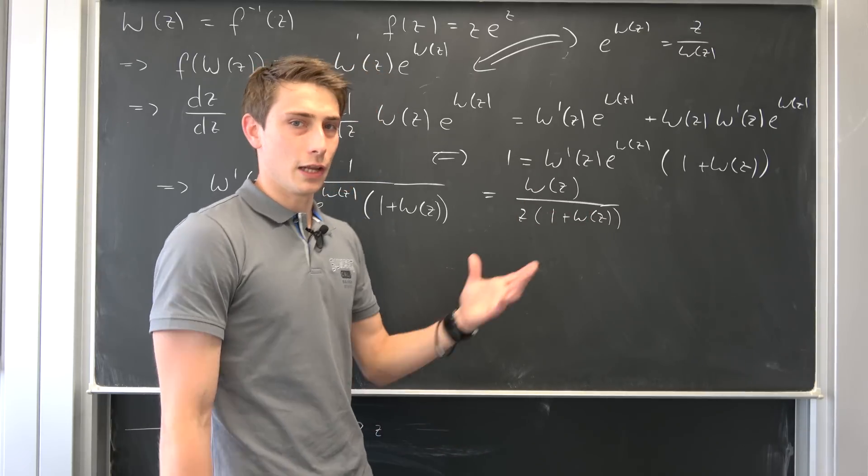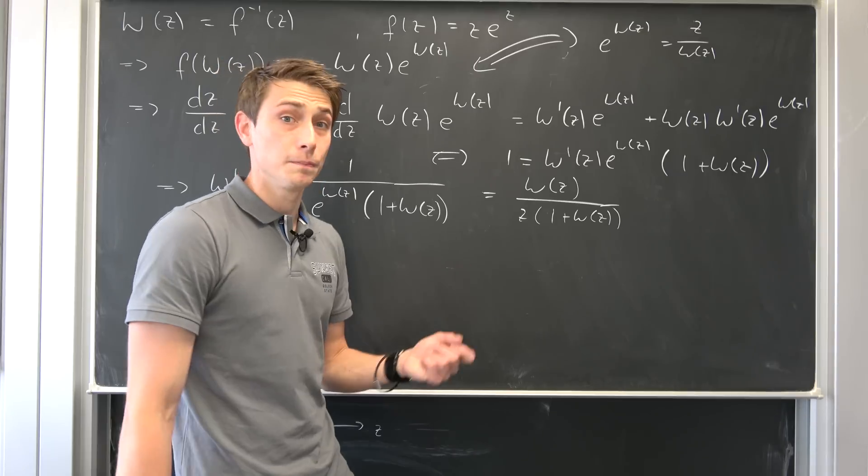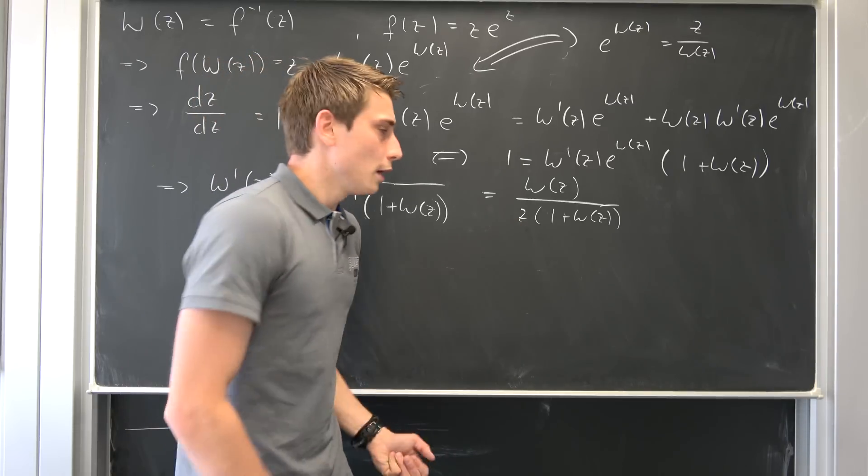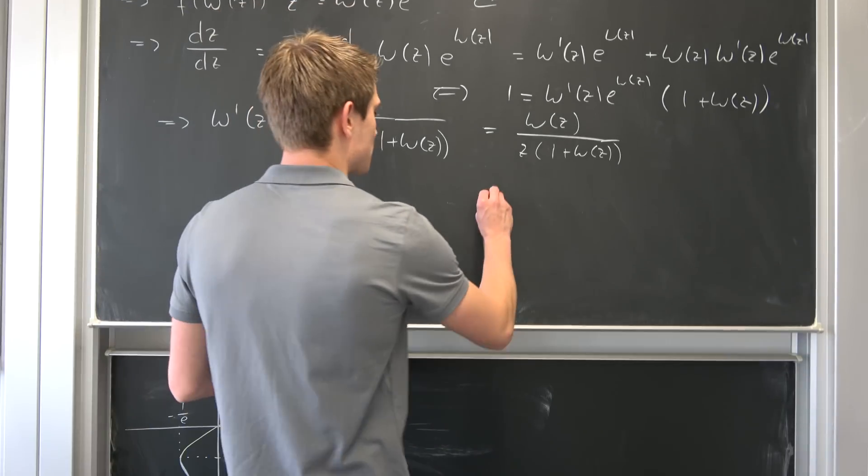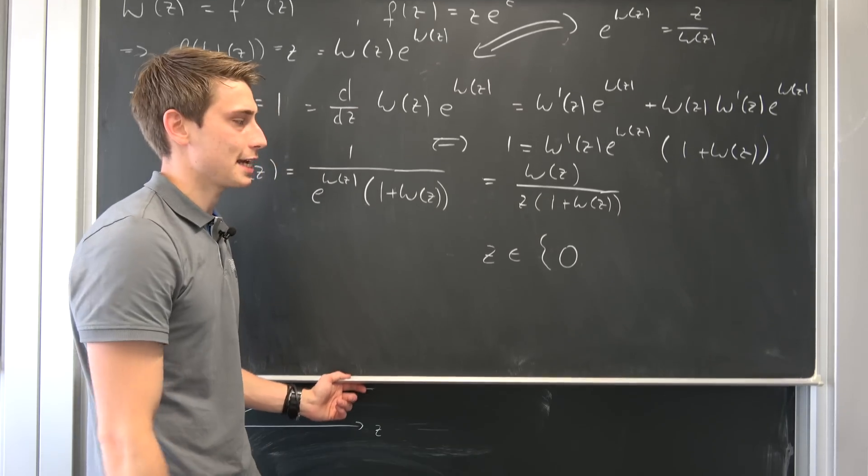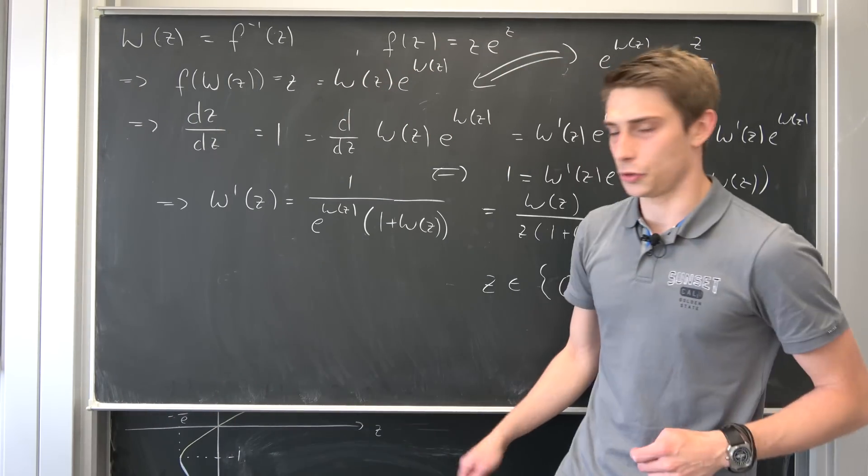Otherwise, the limit wouldn't exist, the derivative. The easiest case to consider is just z being equal to zero. So for this derivative to exist, we don't want z to be an element of zero in the first case. But there's also another case to take a look at.